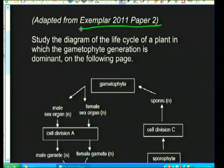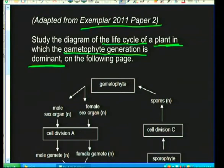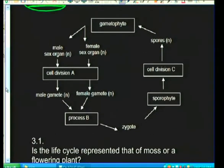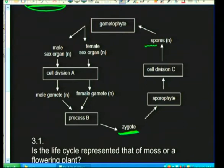Welcome back. We now look at a life cycle diagram where the gametophyte generation is dominant — that's a key clue. The diagram shows reproduction by spores, with male and female sex organs producing haploid (N) gametes. These gametes come together to form a zygote, from which the sporophyte develops, undergoes cell division, and spores are released.